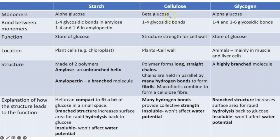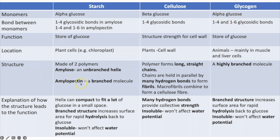Cellulose is found in plants for structural strength. The monomer is beta glucose, resulting in only 1-4 glycosidic bonds, which produces long straight chains. Those chains lie parallel to each other and many hydrogen bonds form between them — individually weak but collectively very strong. They form macrofibrils, which combine to form cellulose fibres. This collective strength from hydrogen bonds is why cellulose in the cell wall gives structure and prevents the cell from bursting.